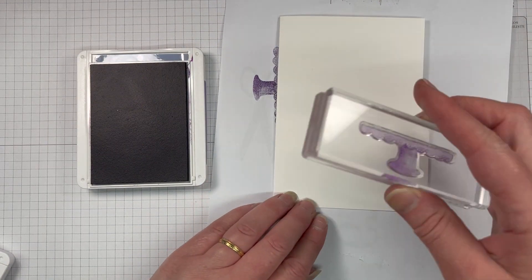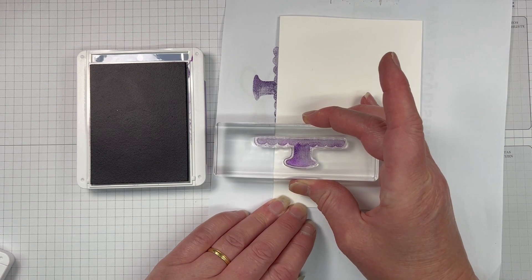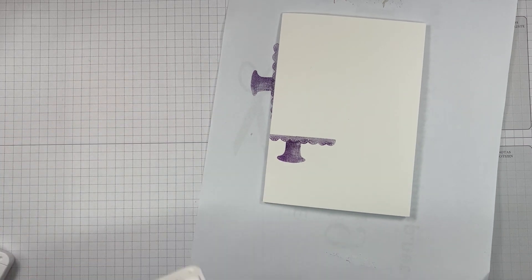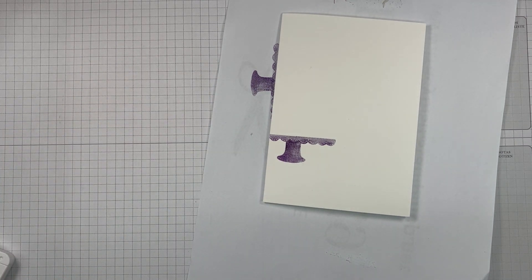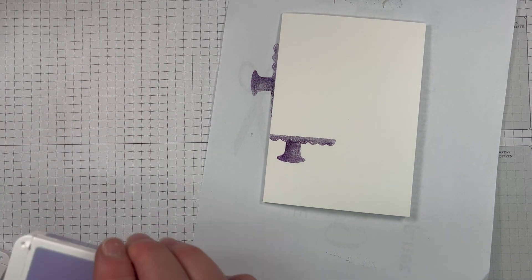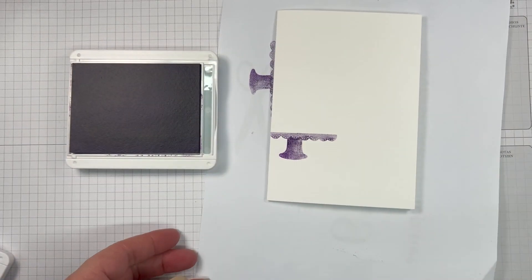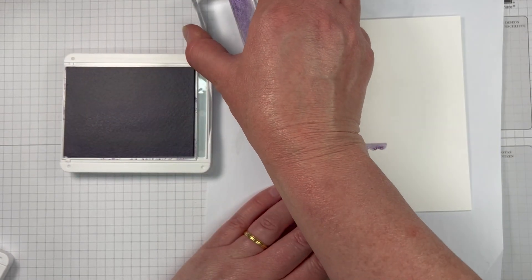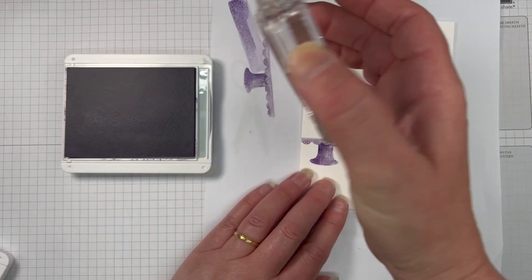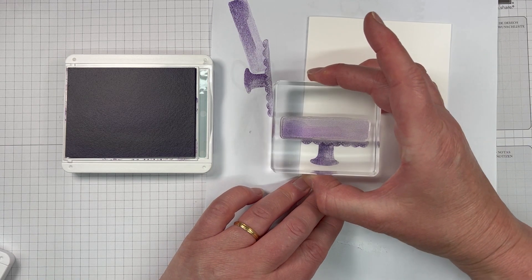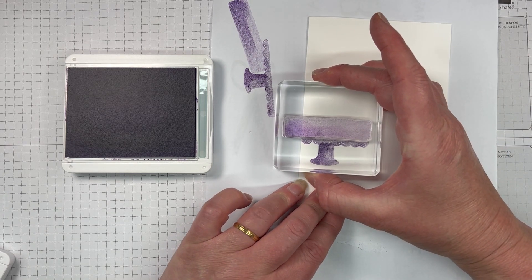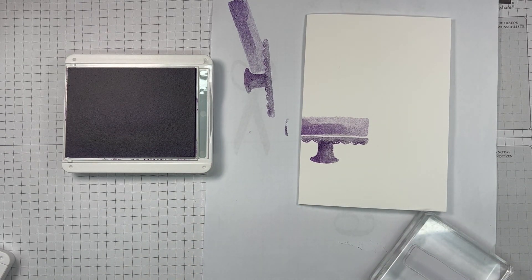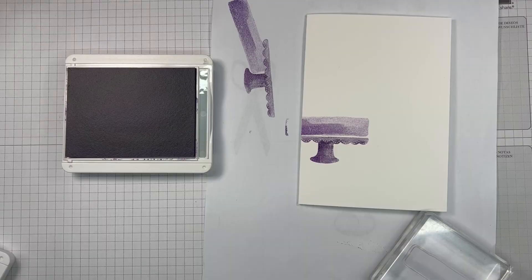So in the stamp set, it's a photopolymer stamp set, which makes it really easy to layer your stamps together because you can layer these up to be as big of a cake or as small of a cake as you like. There's all sorts of different icings. You've got candles, you've got piped icing, flowers, leaves, all sorts of little things and some really great sentiments in this as well. And there's even like a ribbon that you can put on your cake as well. So really cute.